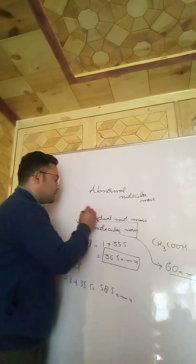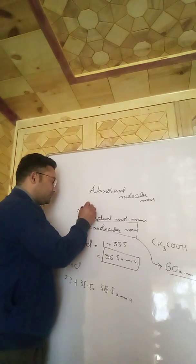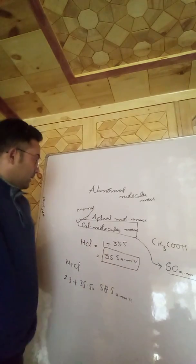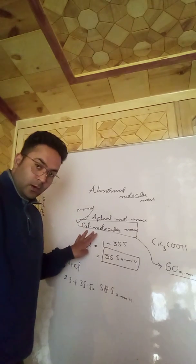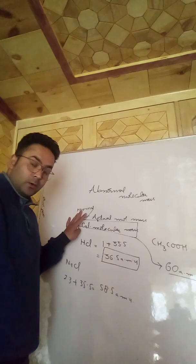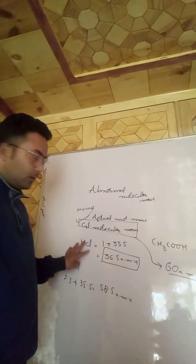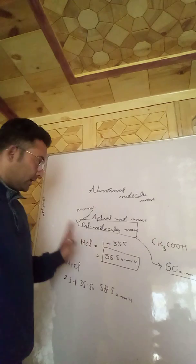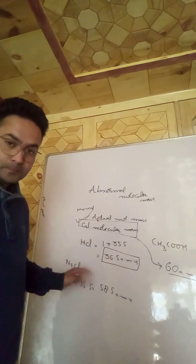This calculated molecular mass is also called the actual molecular mass or the normal molecular mass of the molecule or solute. It is calculated from the atomic masses of the respective atoms and elements present in the molecule or solute.